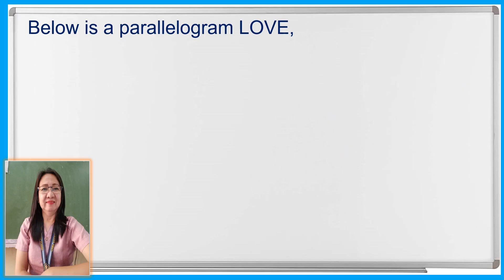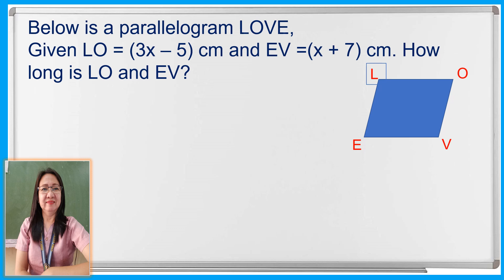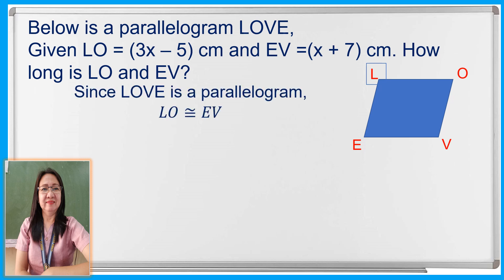As our first example, let us consider the parallelogram L-O-V-E. Given is side L-O with a length measure of 3x minus 5, and side E-V with x plus 7 as its length. We are asked: how long are sides L-O and E-V? Since L-O-V-E is a parallelogram, one of its properties is that the opposite sides are congruent, so L-O is congruent to E-V.